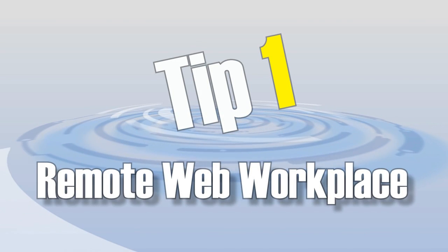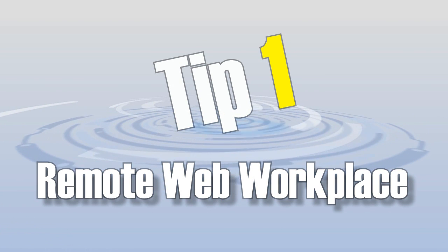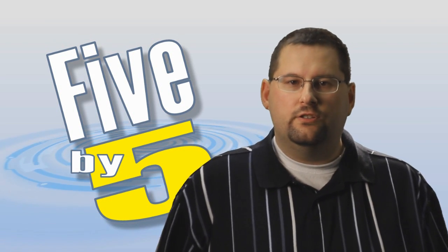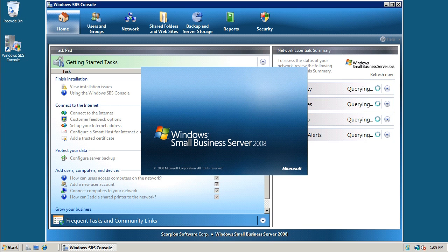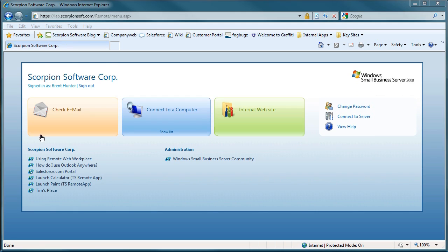Tip 1, Remote Web Workplace. Give your users Anywhere, Anytime Access with R-Dub-Dub. One of the most useful features in Small Business Server is Remote Web Workplace. It's the main web portal on SBS that gives remote users access to their work email, contacts and calendaring, as well as the company intranet and the files and computers at the office, all through a web browser.